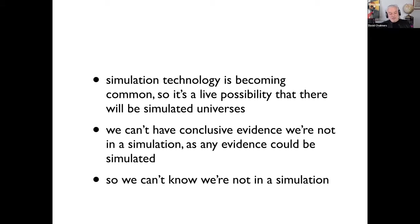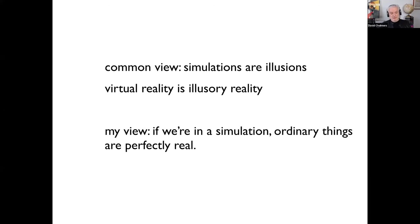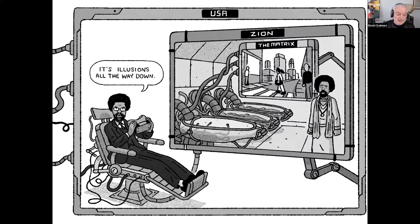You might think that's bad news — we might be in a simulation — but the rest is good news. It turns out that being in a simulation is not as bad as you might have thought. There's a very common view that simulations are illusions, that virtual reality is illusory reality. But my view is that this common view is wrong. Even if we are in a simulation, ordinary things around us are perfectly real — there are still tables, chairs, planets, and people. They may be digital objects, but they're no less real for all that.